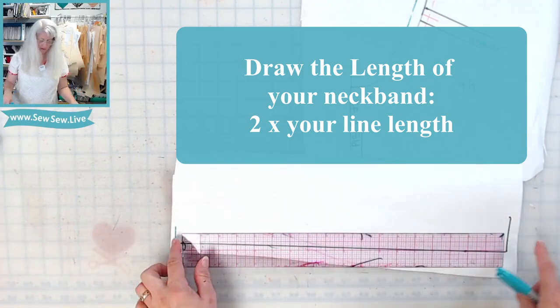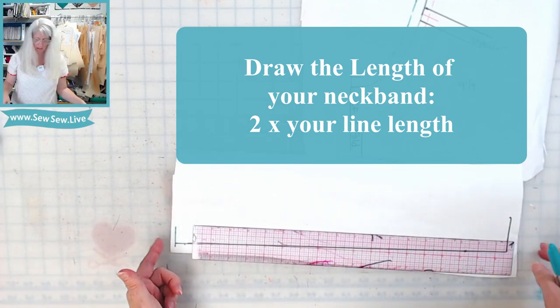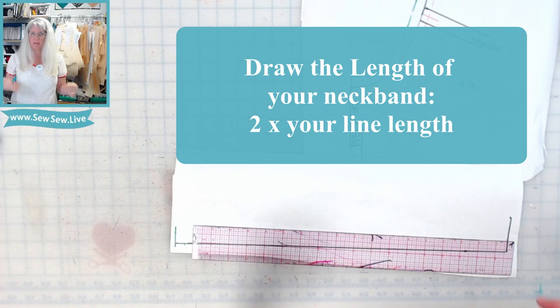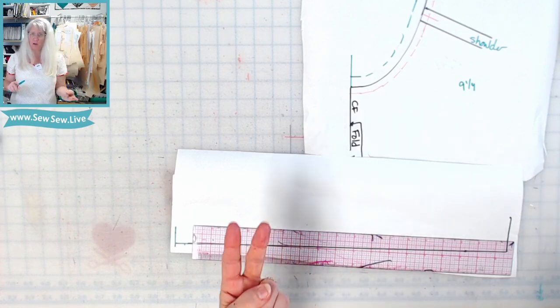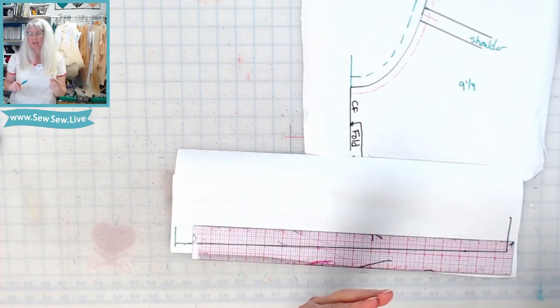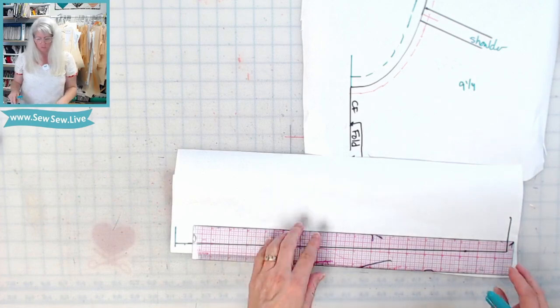All right, so now I have my full neckband drawn on here and now you're going to make it the width that you want. If I want my neckband to be one inch wide finished, I need it to be two inches wide folded plus the seam allowance that I want. So I'm going to make it two and three quarters.